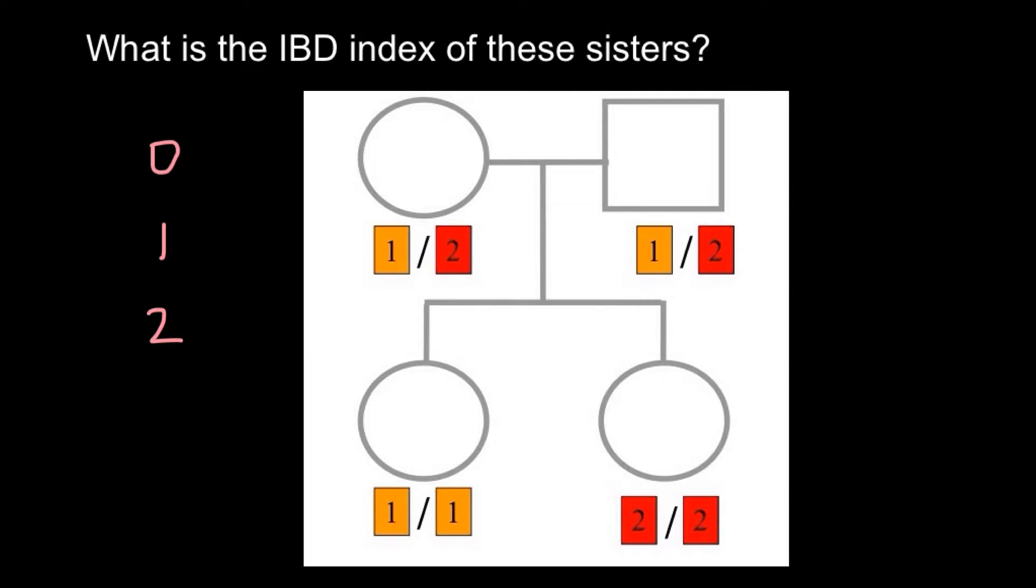For example, if I had allele A1 A1 in one particular locus and you also had A1 A1 in some particular locus, we wouldn't measure the IBD index because we are not relatives.